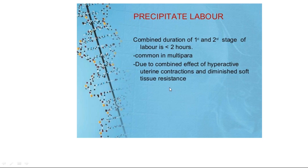Reassure the patient. Rule out associated contracted pelvis, disproportion, malpresentations, and malpositions, and take action accordingly. If the pelvis is good, baby is average size, and the patient has no risk factors, and there is at least 2 cm dilatation with the cervix well taken up, you can do a low artificial rupture of membranes. If the cervix is long, you can prime the cervix using prostaglandin.